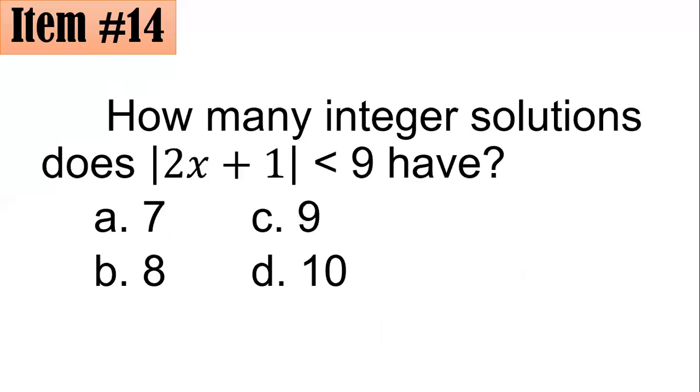Number 14. How many integer solutions does the absolute value of |2x + 1| < 9 have? Is it 7, 8, 9, or 10? So this one here is a positive value, so I'm sure that there are answers for this one. So remember, by using the definition of an absolute value with less than here, then it follows that the value of 2x + 1 is between negative 9 and positive 9. That is my definition.